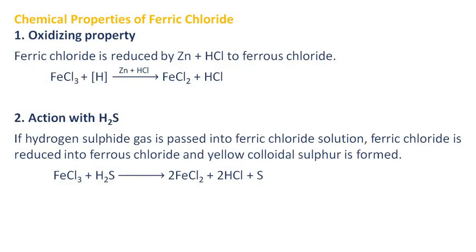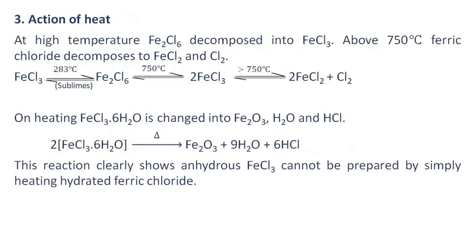Chemical properties of ferric chloride: Oxidizing property — ferric chloride is reduced by zinc in the presence of hydrochloric acid to ferrous chloride. Action with hydrogen sulfide: if hydrogen sulfide gas is passed into ferric chloride solution, ferric chloride is reduced into ferrous chloride and yellow colloidal sulfur is formed. Action of heat: at high temperature, Fe2Cl6 decomposes into ferric chloride, and above 750 degrees Celsius, ferric chloride decomposes to ferrous chloride and chlorine.